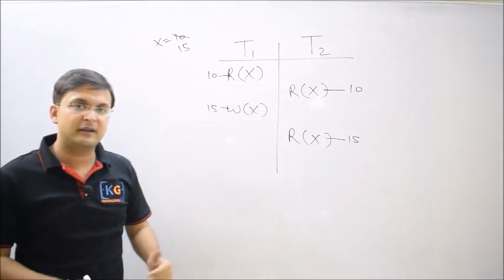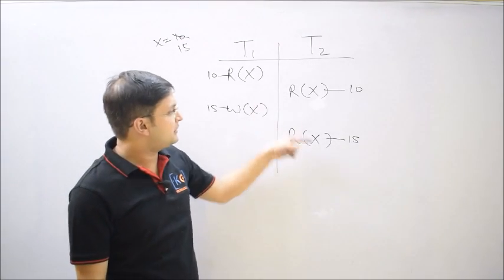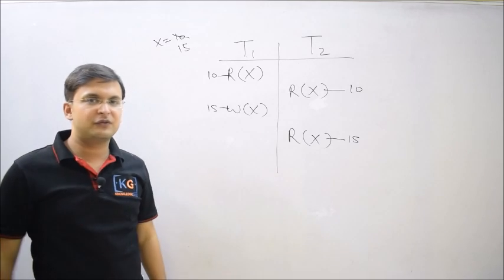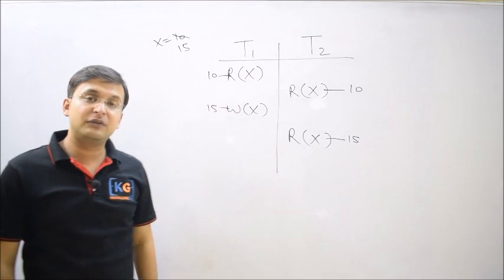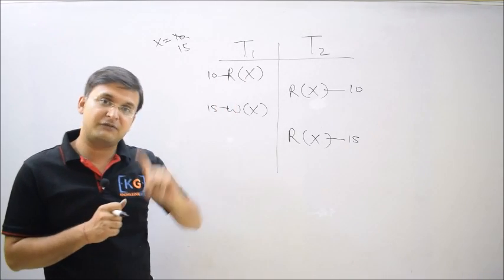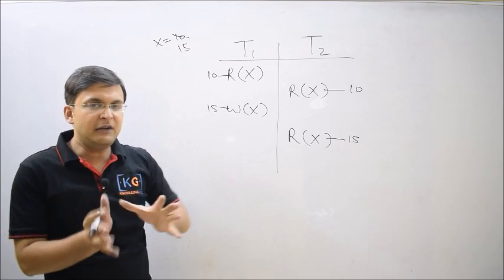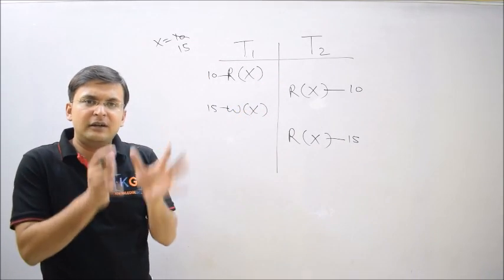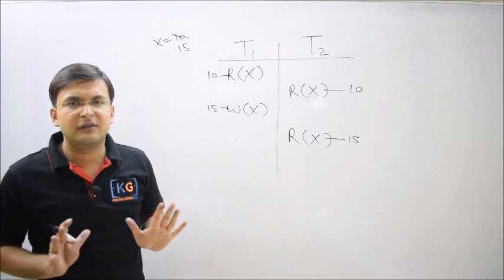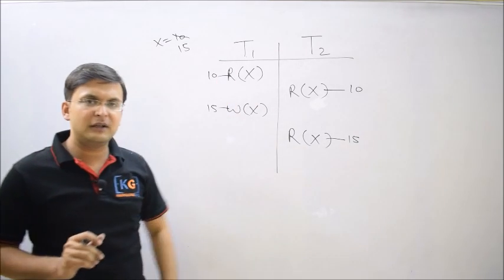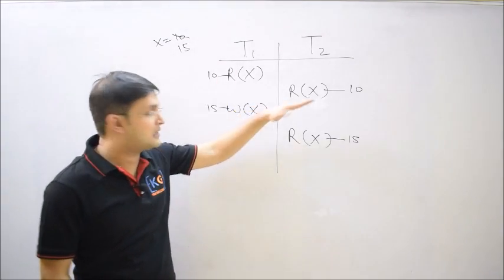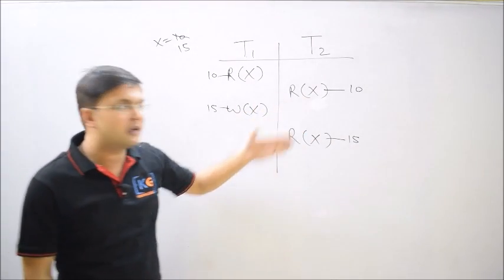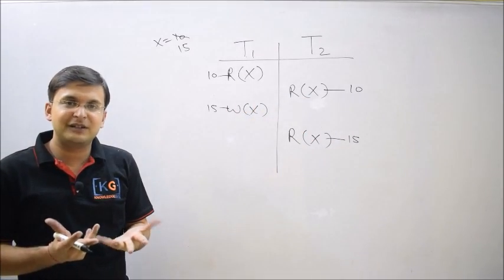What is the confusion? Before some time, transaction T2 had read the value 10, and now it reads the value 15. Transaction T2 is confused because it assumes isolation — as discussed in the previous video — meaning it thinks it is the only transaction executing in the system. If T2 is the only one executing and T2 has not changed the value, then how did the value change from 10 to 15?